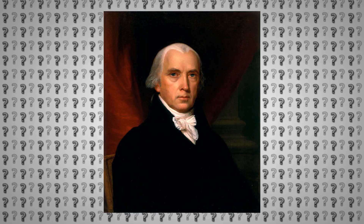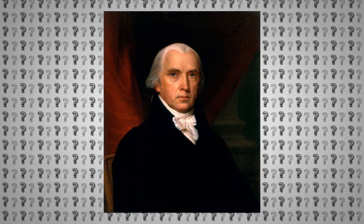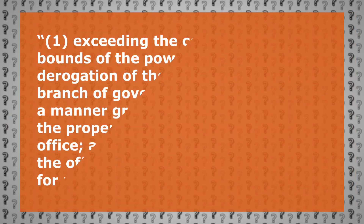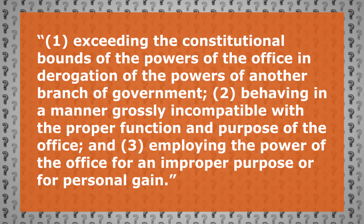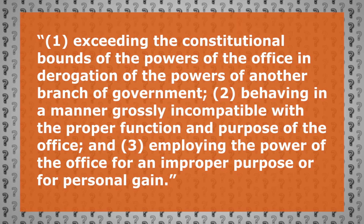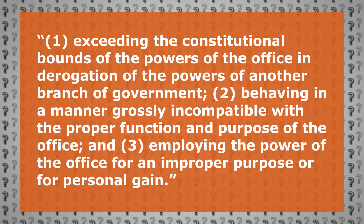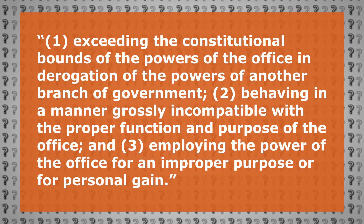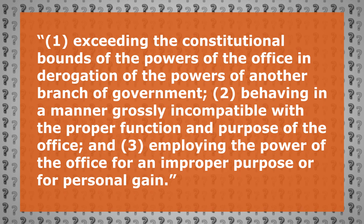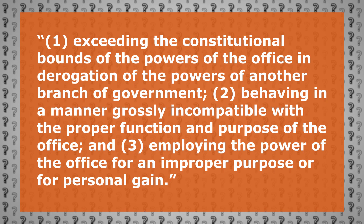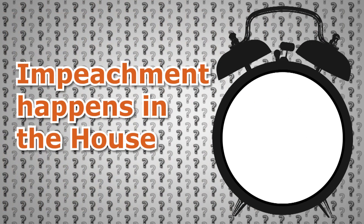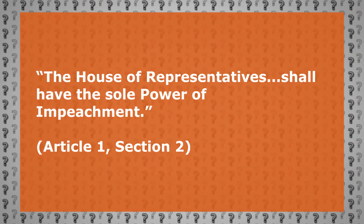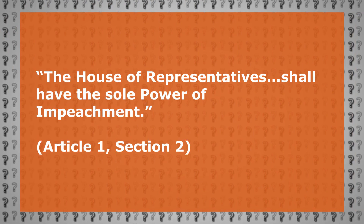The report also categorizes all previous American impeachments as stemming from conduct that falls into one of these three categories: exceeding the constitutional bounds of the powers of the office and derogation of the powers of another branch of government; behaving in a manner grossly incompatible with the proper function and purpose of the office; and employing the power of the office for an improper purpose or for personal gain. Number four: impeachment is a process for the House. The House of Representatives shall have the sole power of impeachment — Article 1 Section 2.